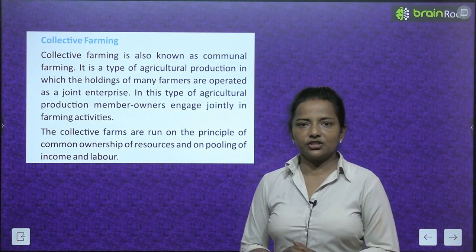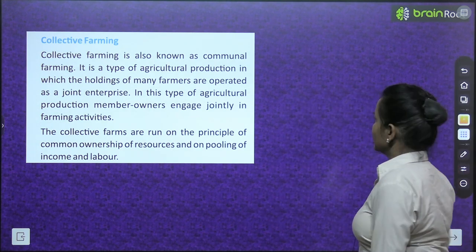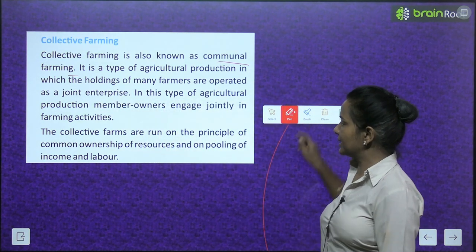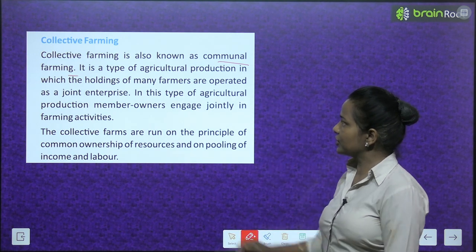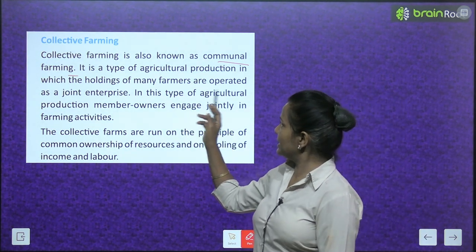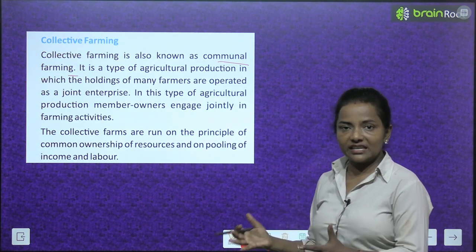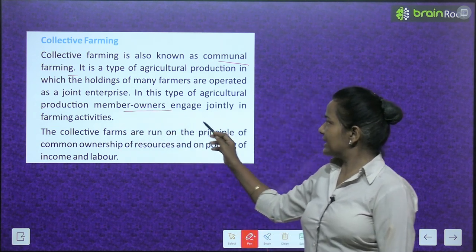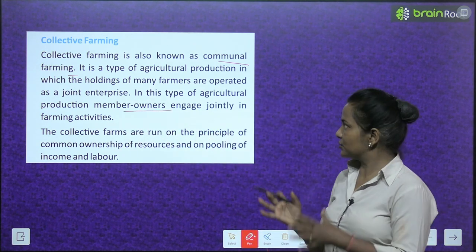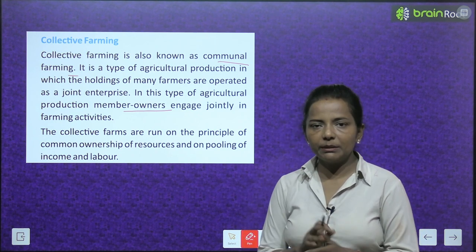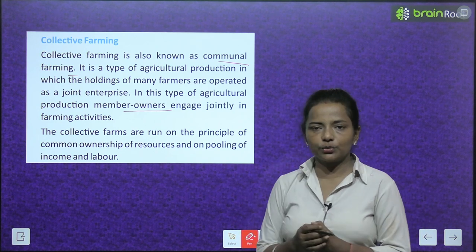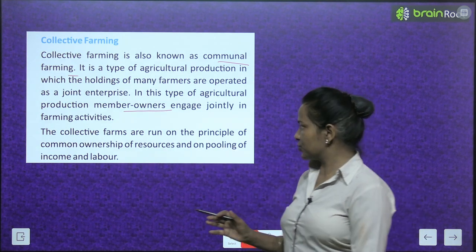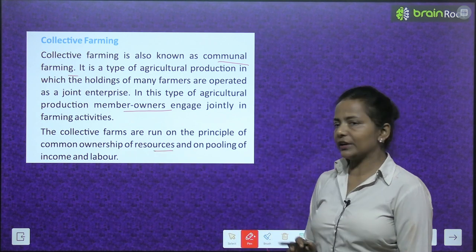Collective farming, also known as communal farming, is a type of agricultural production in which the holdings of many farmers are operated as a joint enterprise. Member owners engage jointly in farming activities. Collective farms are run on the principle of common ownership of resources and on pooling of income and labor.